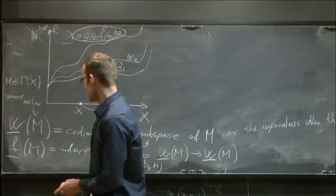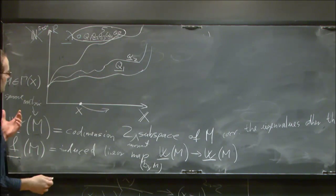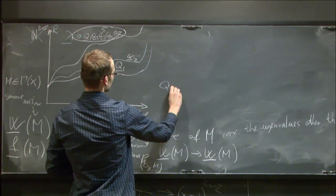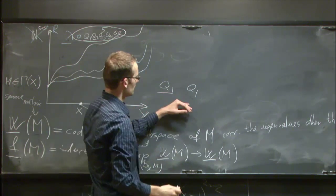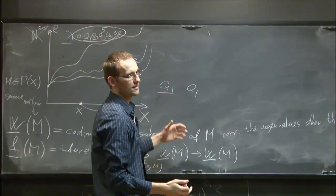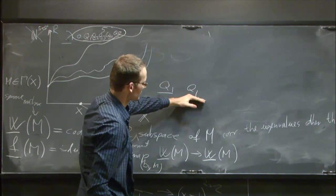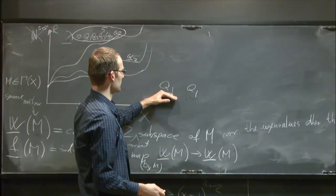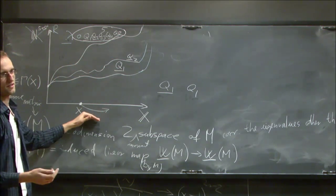About the underline notation: underlined quantities are functions on the space of intersection matrices. So Q1 without underline is a concrete matrix, but Q1 underlined is a function on the space of intersection matrices.